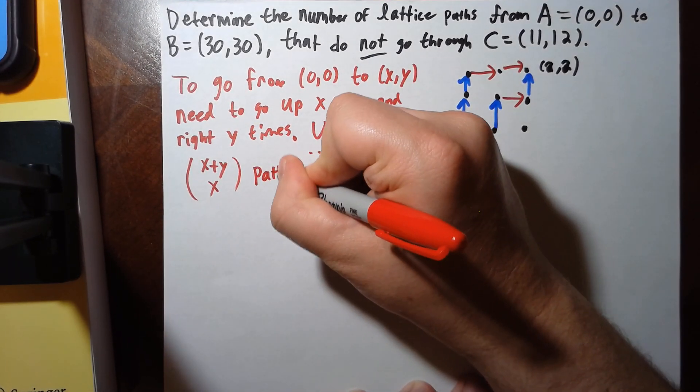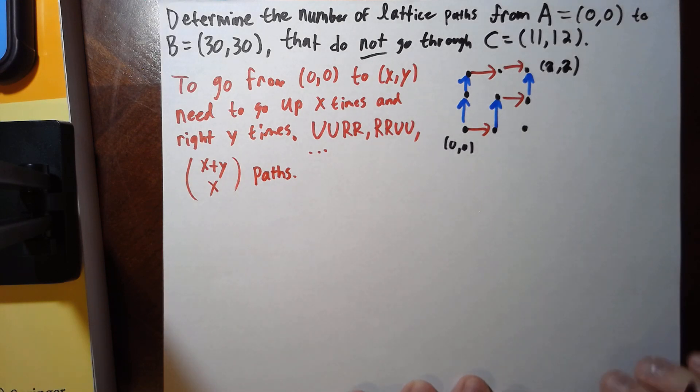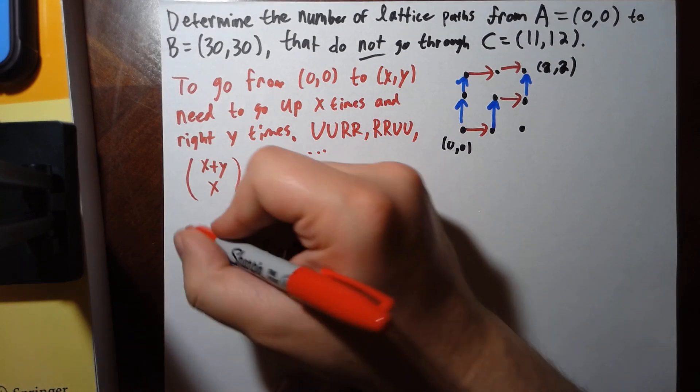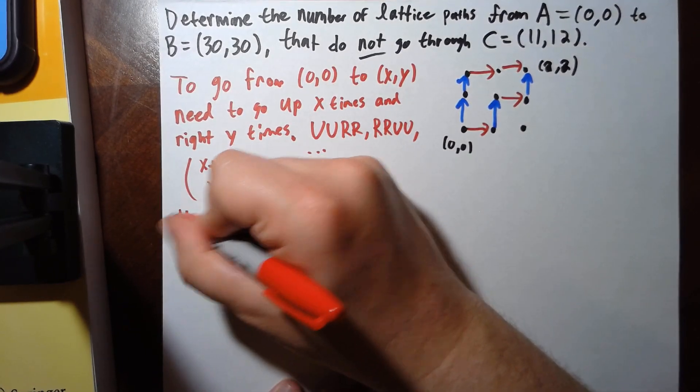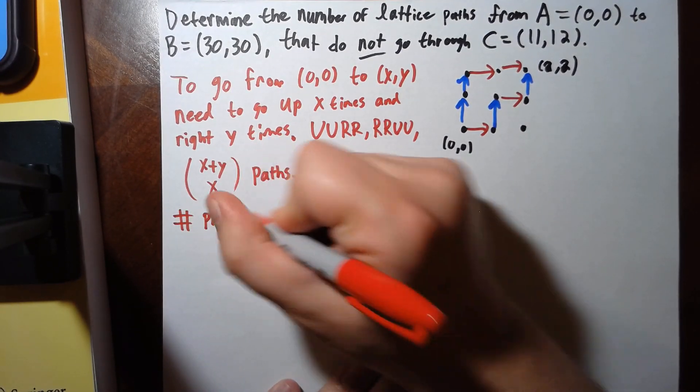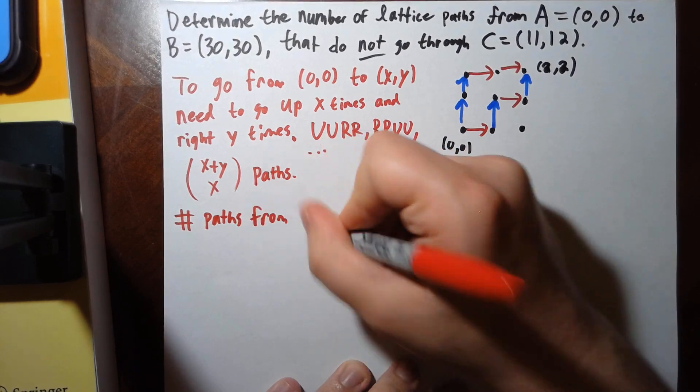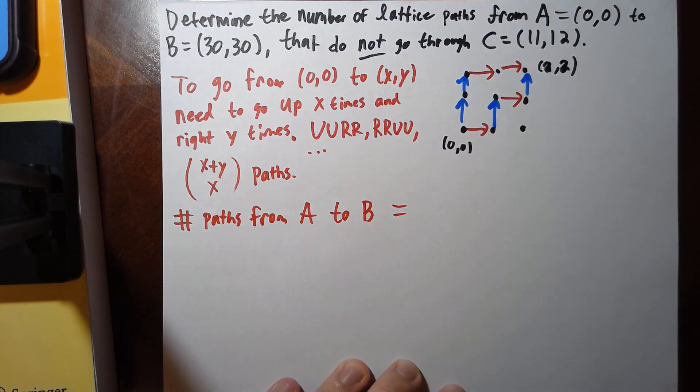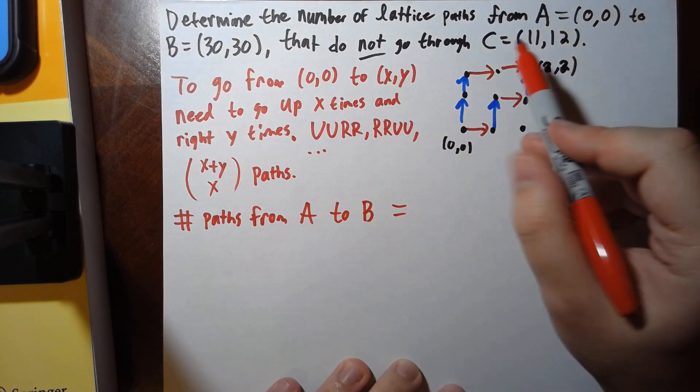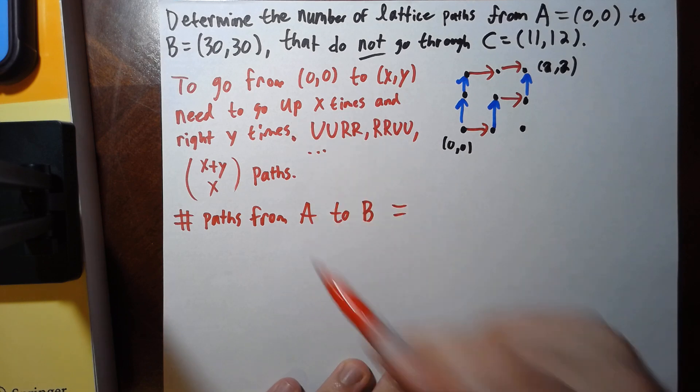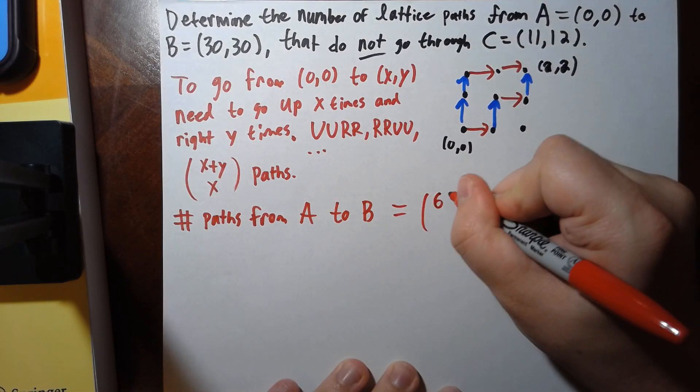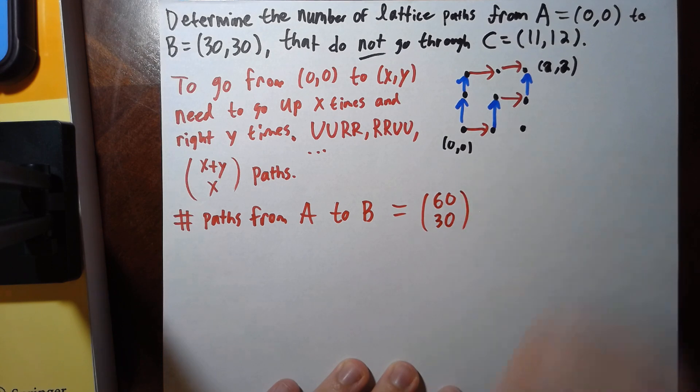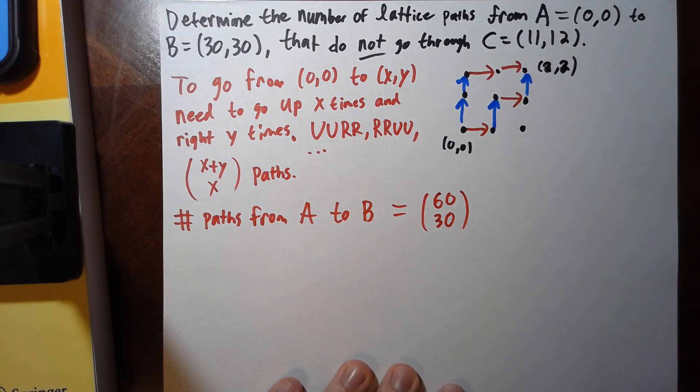Okay, so the idea for this problem: the number of paths from A to B would then equal—well, it's just (0,0) to (30,30), plugging it into this formula, we're going to get (60 choose 30). But we don't want it to go through C, so we need to subtract the paths.